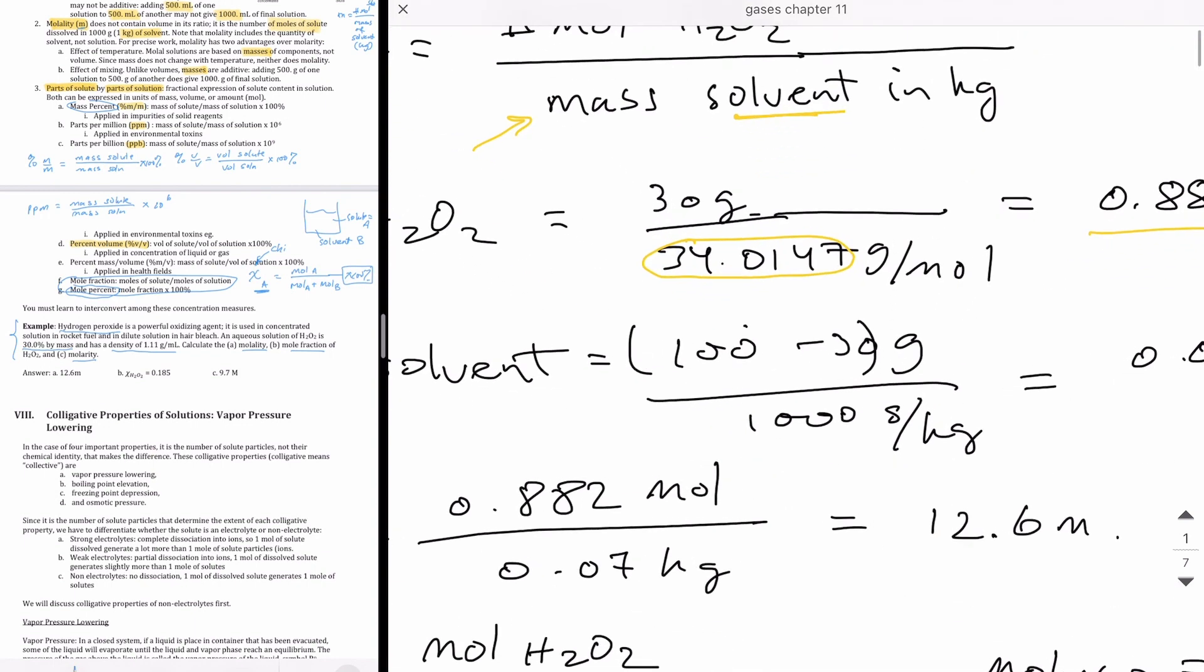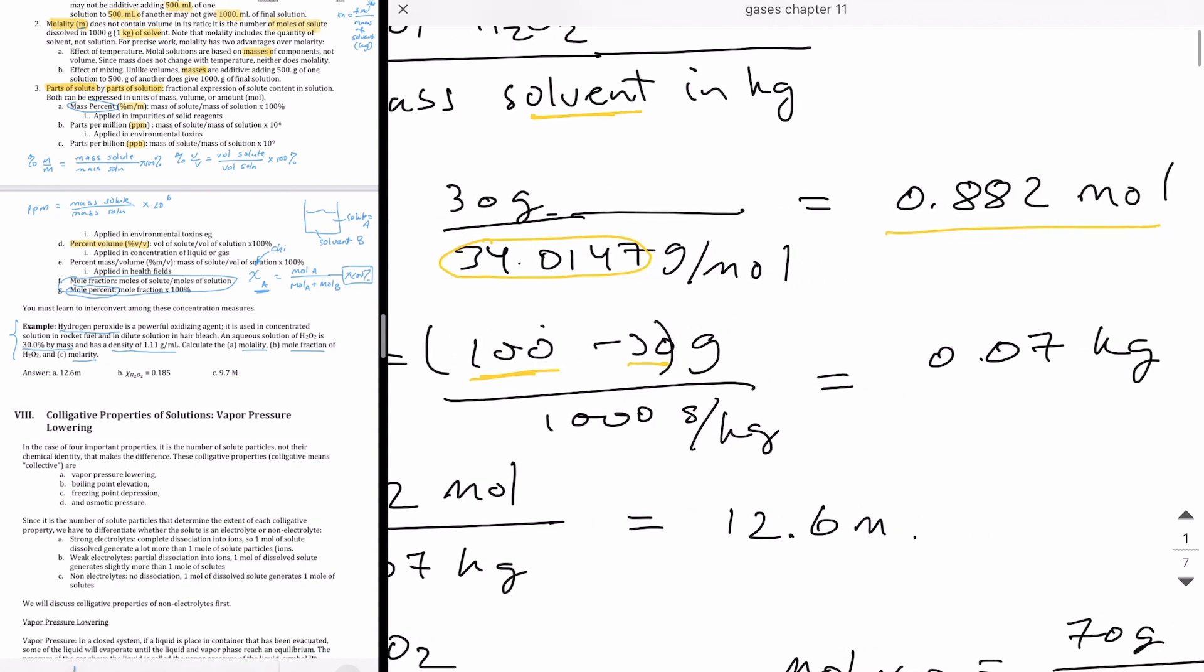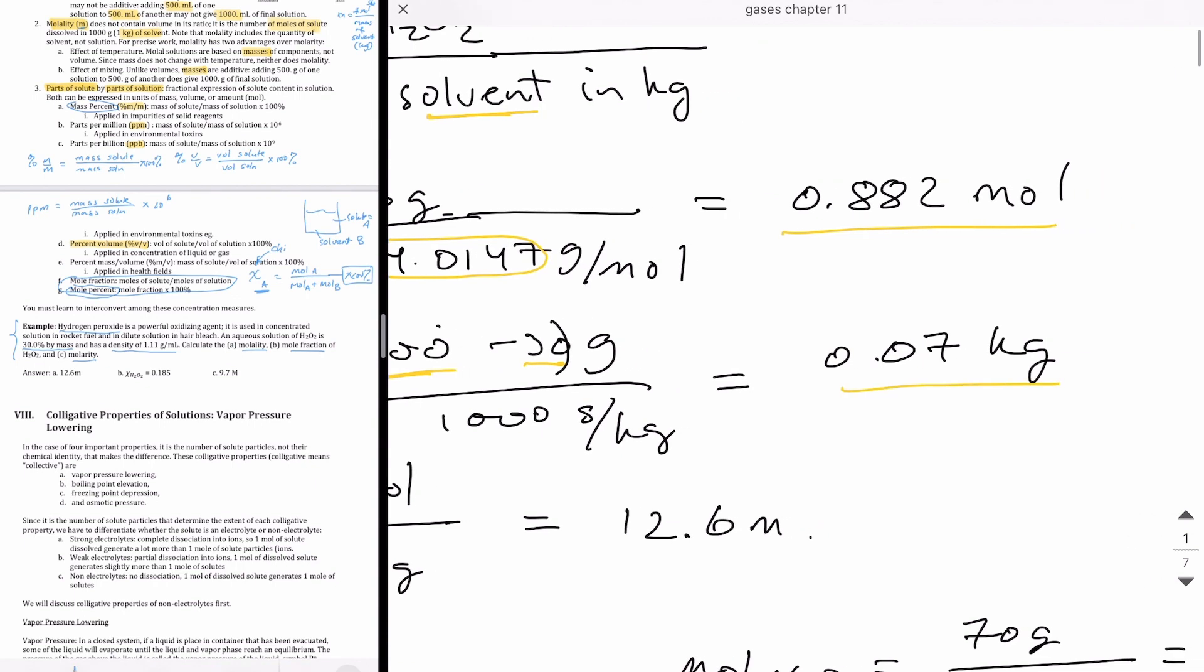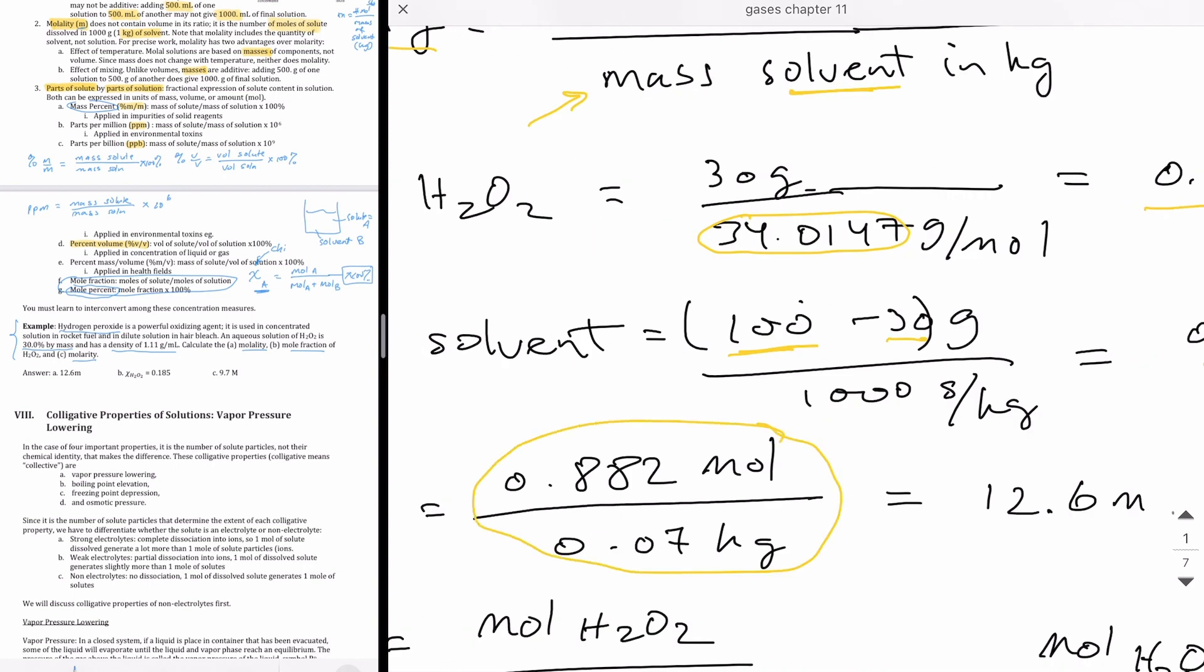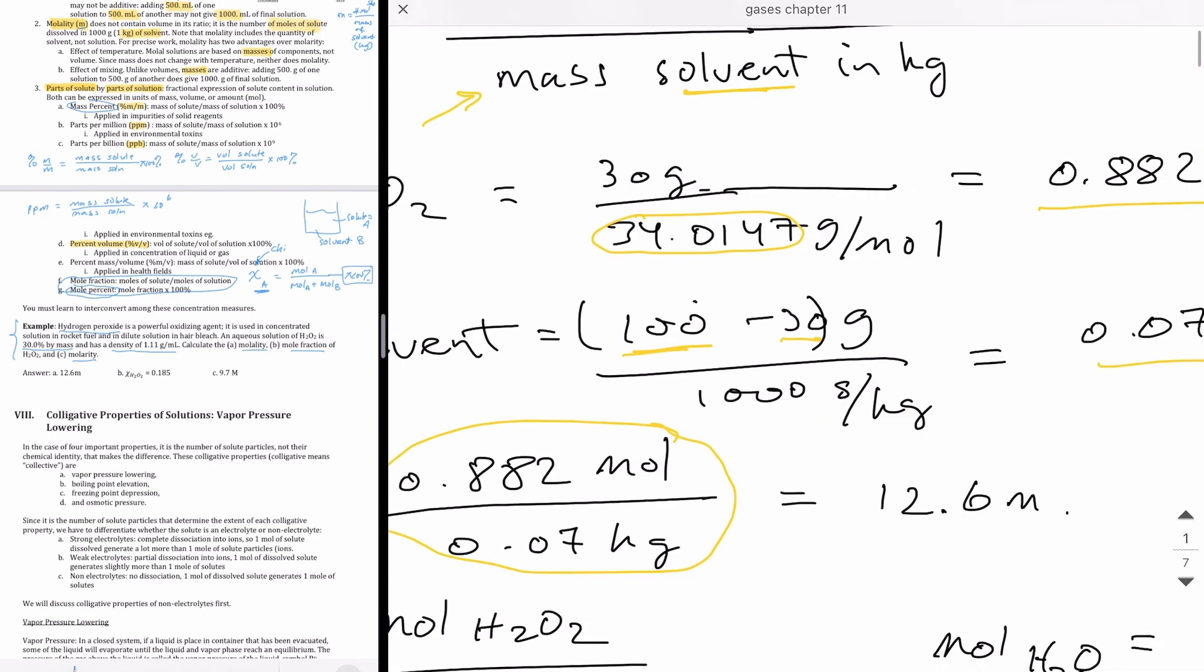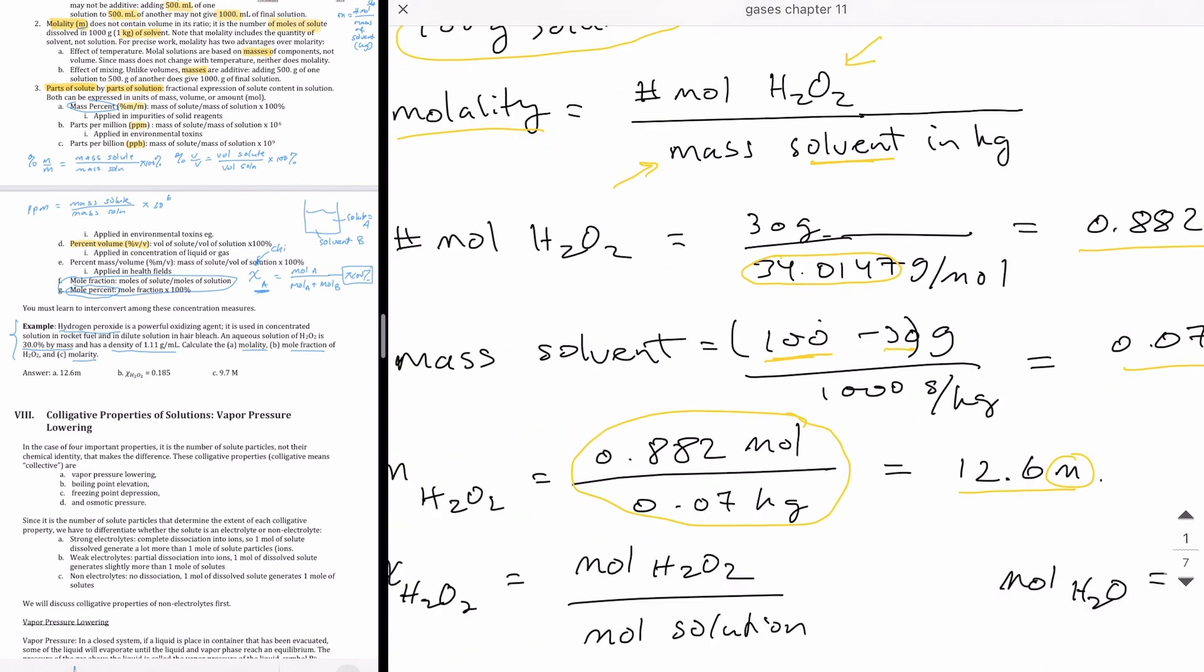Now we need the mass of the solvent, which is the denominator. To get the mass of the solvent, all I need to do is take the hundred grams of solution that I have, subtract out the hydrogen peroxide, which is 30 grams, convert this to kilograms. I get 0.07 kilograms. So when I divide those two numbers together, 0.882 by 0.07, I should get my answer in molality. So 12.6 molal.